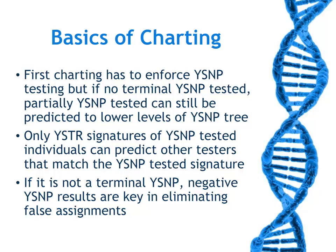For charting basics, the charting has to enforce SNP testing. If no terminal SNPs are found — in other words, you're not at the lowest part of your tree — partially Y-SNP tested people can still be predicted to lower levels of the tree. Only SDR signatures of Y-SNP tested members can predict others that are not Y-SNP tested. You don't want prediction to predict other predictions, as that is bad statistics. If it is not a terminal SNP, then negative SNP results are key to eliminating many false assignments.